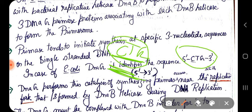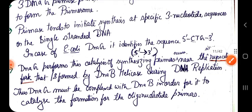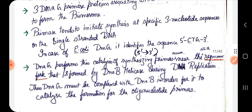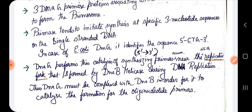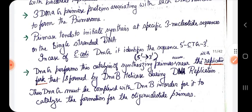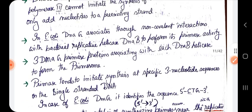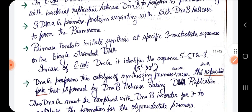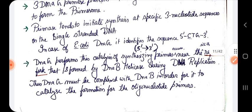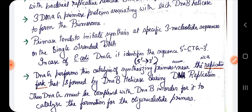DnaG performs the catalysis of synthesizing primers near the site of the replication fork, which was formed by DnaB helicase during DNA replication. I will try to explain this primase in the next video. That's all for this lecture.